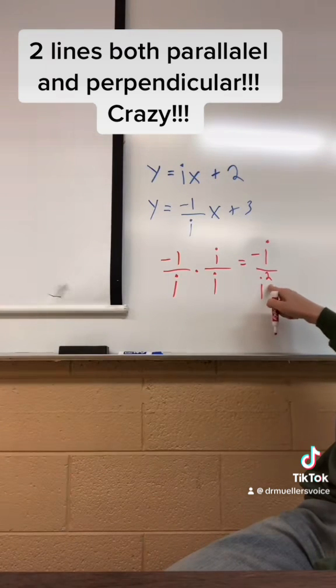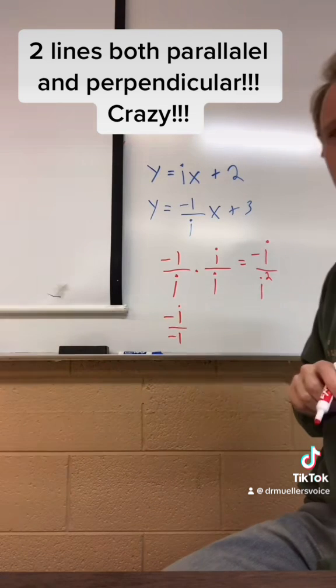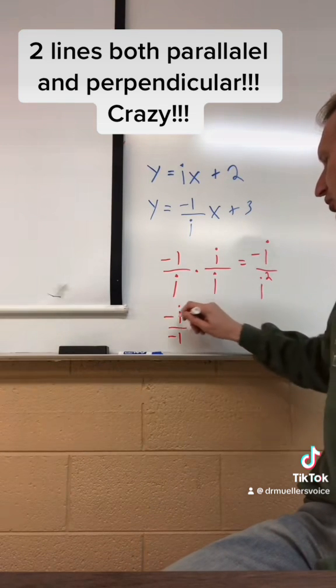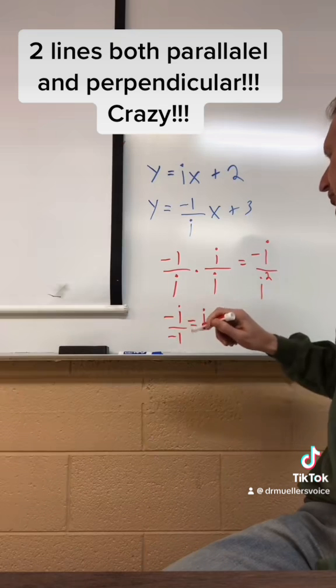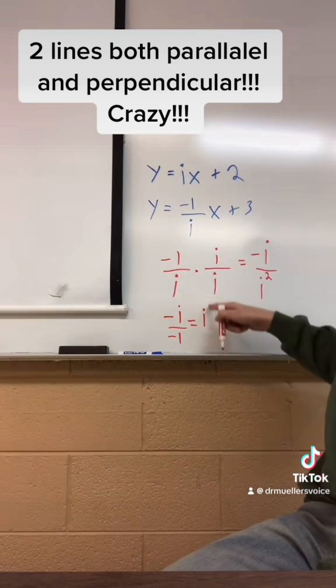i to the second power is simply negative 1. So now we have negative i over negative 1, which equals i. Thus, this and this are the same.